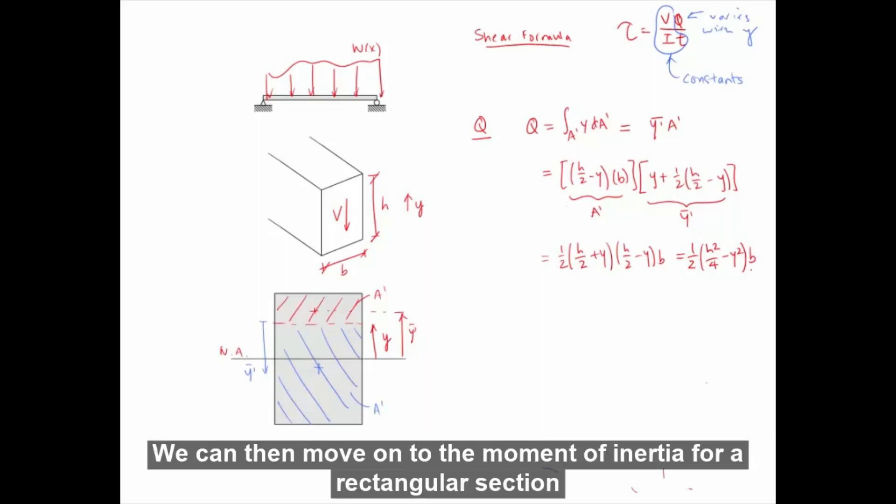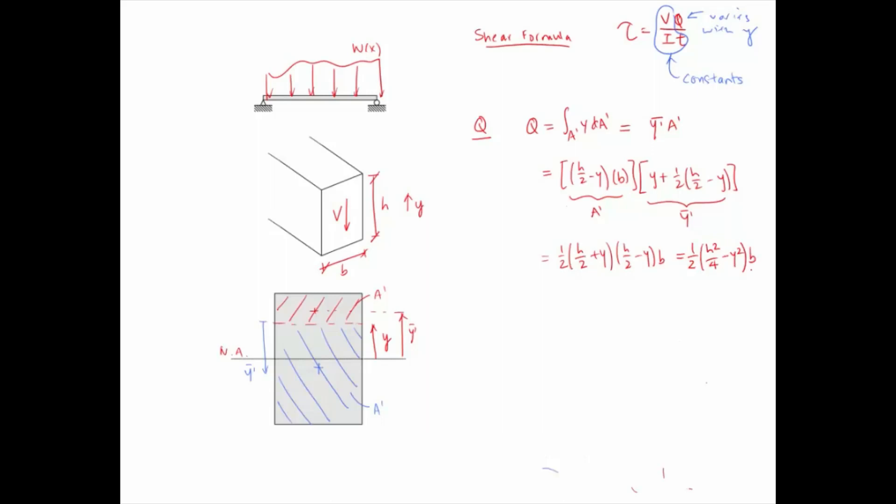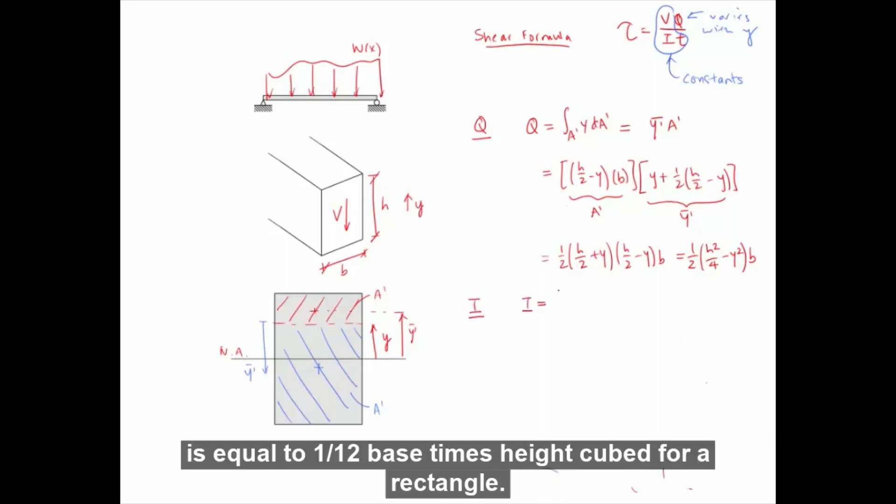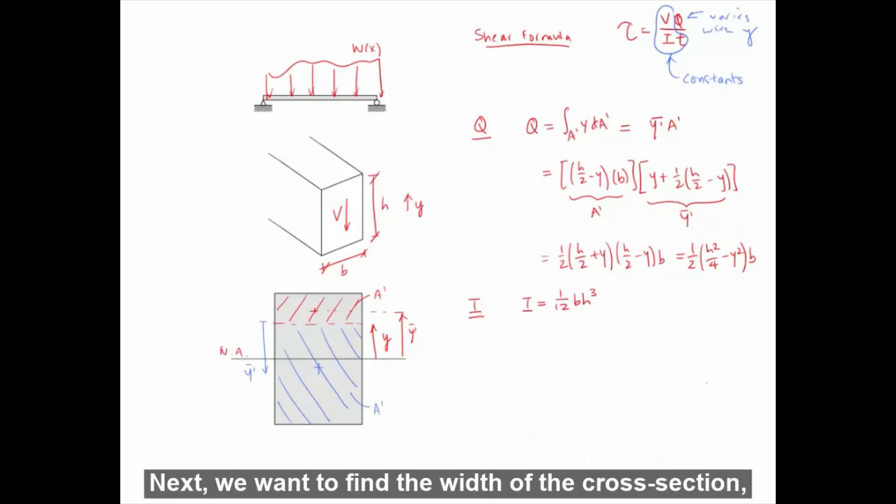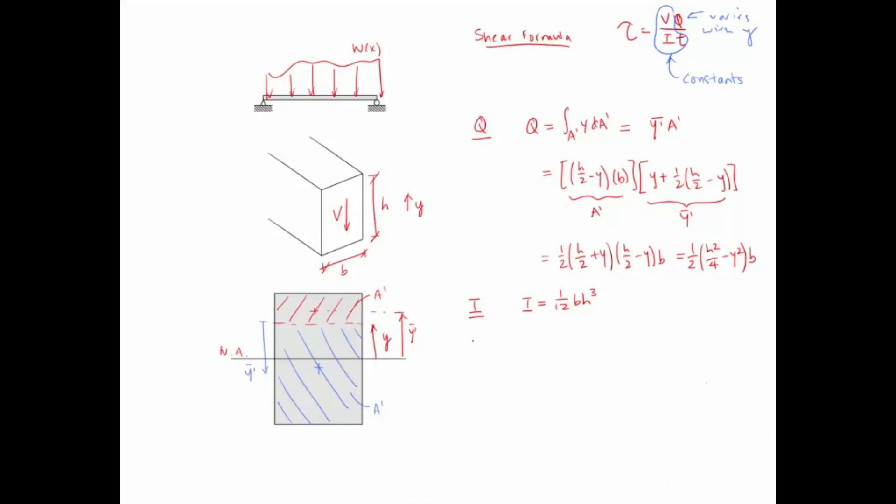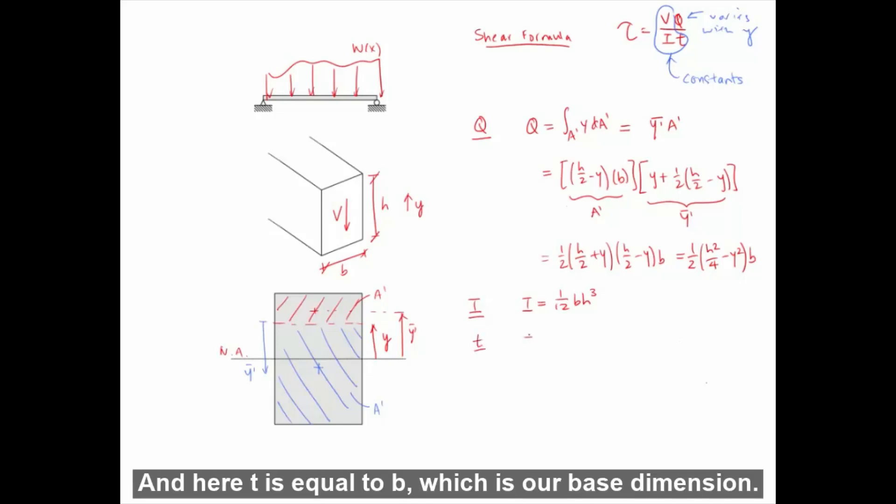We can then move on to the moment of inertia for a rectangular section. The moment of inertia, I, is equal to 1 over 12 base times height cubed for a rectangle. Next, we want to find the width of the cross section where we want to calculate our shear stress, which is called T. And here T is equal to B, which is our base dimension.